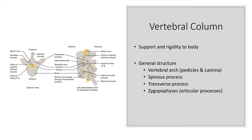The second portion of your axial skeleton is the vertebral column, which provides support and rigidity to your body. You should be able to identify general structures of a vertebra such as the vertebral arch that contains the pedicles and the lamina. There's also the spinous process, the transverse process, and what are called zygapophyses, which are the articular processes that articulate with each vertebra.